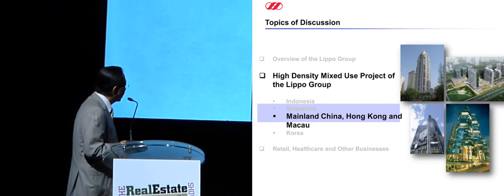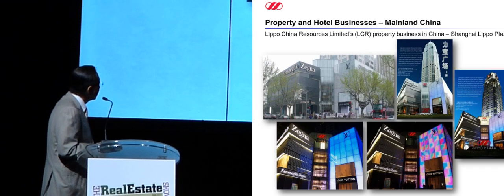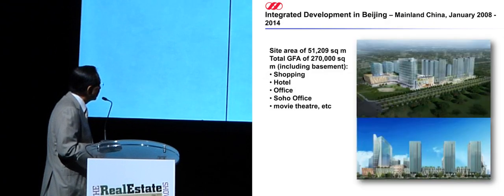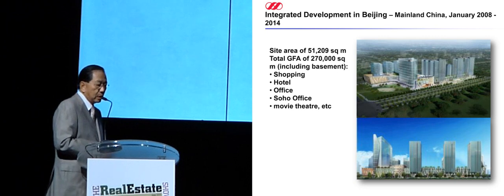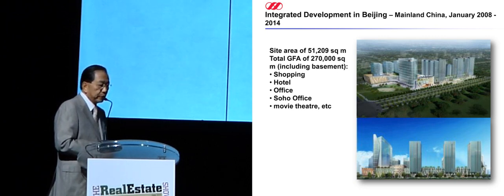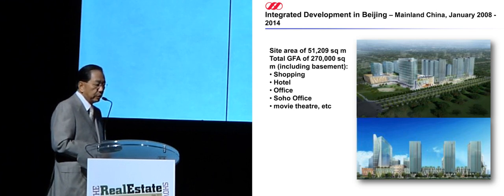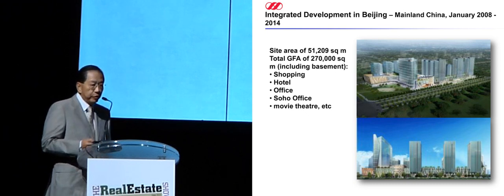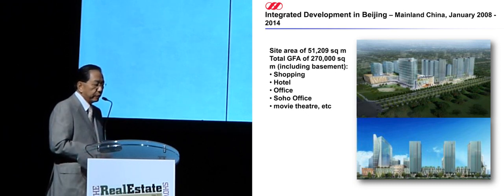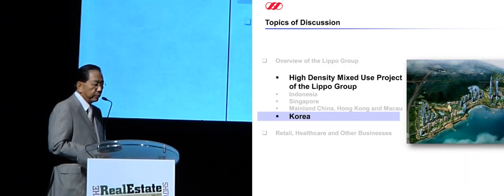In mainland China, Hong Kong, and Macau, we have office and retail projects. In Beijing, we have a high-density development on roughly 51,000 square meters of land with a total GFA of 270,000 square meters. It includes a hotel, Soho offices, movie theaters, and convention space — quite successful in Beijing.